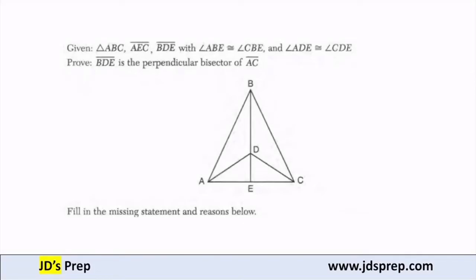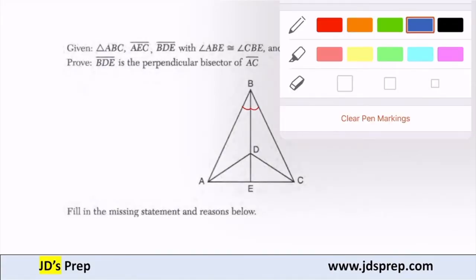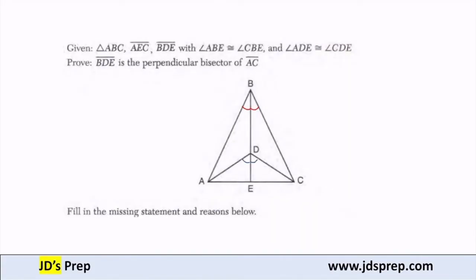Hello. Welcome to JD's Prep. In this problem, you're given that triangle ABC, AEC, BDE, and angle ABE is congruent to CBE. I also know that angle ADE is congruent to CDE. We want to prove that BDE is a perpendicular bisector of AC. In order to do that, we're going to fill out our table below.